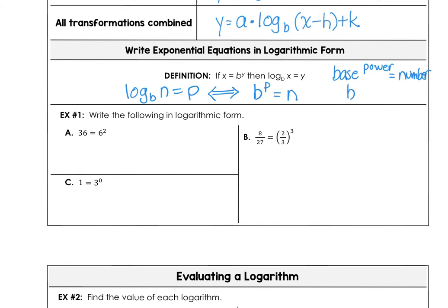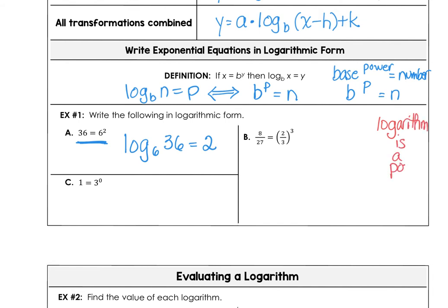I'm using b for base, p for power, and n for number, similar to the way the definition uses x, y, and b. To practice this in example one, we want to write '36 is 6 squared' as a logarithm — going from exponential form to log form. Log base b of a number equals the power, so log base 6 of 36 equals 2. A logarithm is a power — that's really important.